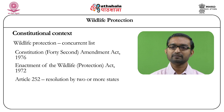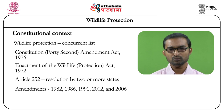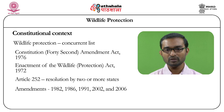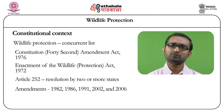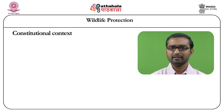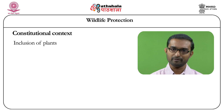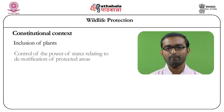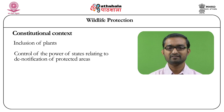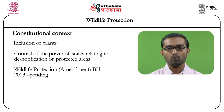After 1972, the Act underwent at least four or five amendments — in 1982, 1986, 1991, 2002, and 2006. These amendments included significant changes: originally the Act was meant only for wild animals, but through amendments, plants were also included, and the amendments also tried to strengthen the power of the central government as far as regulation and protection of wildlife is concerned. There is also a Wildlife Protection Amendment Bill 2013 pending before Parliament.